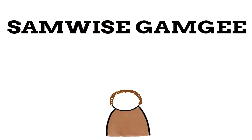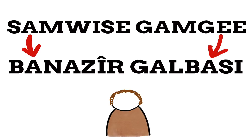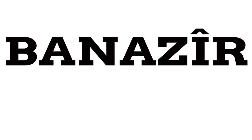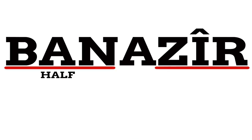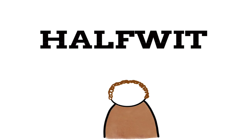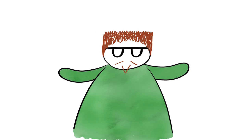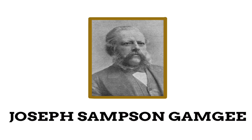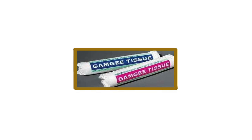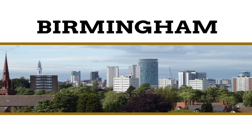Much like Frodo, Samwise Gamgee is the English translation of his Hobbitish name, Banazir Galbasi. Banazir comes from the Westron words 'ban' meaning half and 'zir' meaning wise — so Sam's name pretty much means halfwit. Poor guy. Stepping out of the lore of the books, the surname Gamgee comes from real life: Joseph Samson Gamgee, who invented the surgical dressing known as Gamgee tissue. The name Gamgee alone became a colloquial term for cotton wool in Birmingham, where Tolkien grew up.